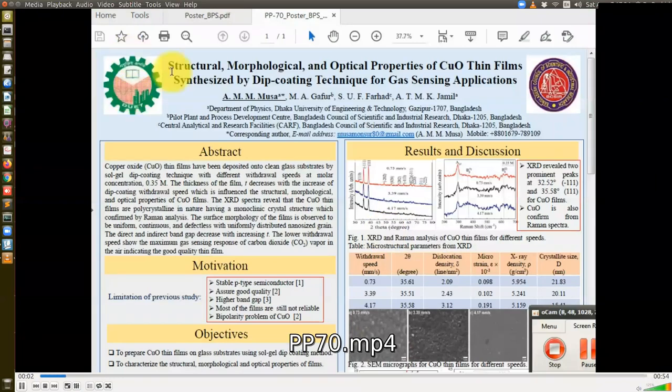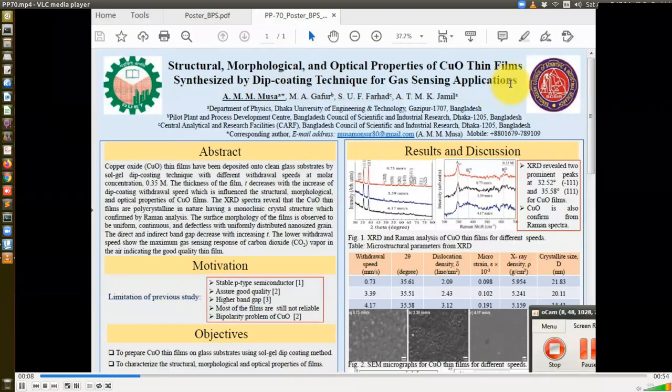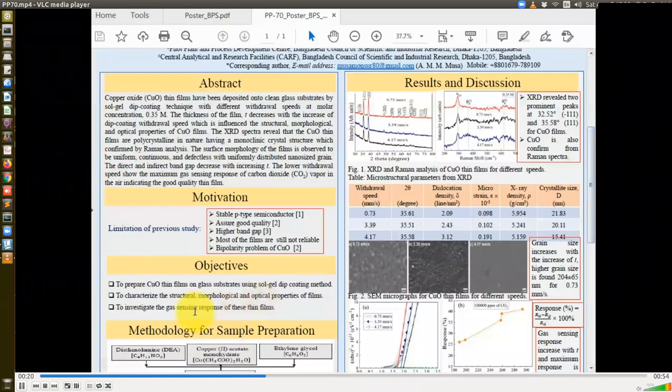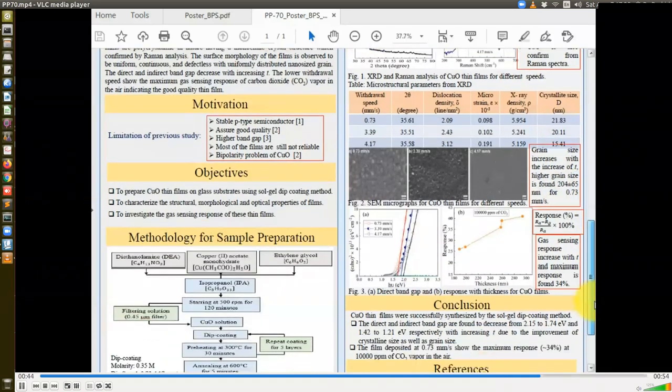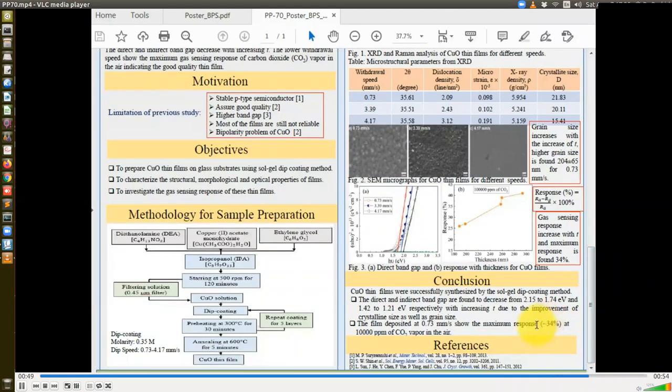Hello everyone. This is Arshad Mahmood Musa. Our topic is The Structural, Morphological and Optical Properties of Cuprous Oxide Thin Film Synthesized by Dip Coating Technique for Gas Sensing Applications. Cuprous oxide thin films have been deposited onto cleaned glass substrate by sol-gel dip coating technique with different withdrawal speed and molar concentration of different parameters. Our main objective is to investigate the gas sensing response of this thin film. The precursor used is copper acetate monohydrate. Here in results and discussion, we have two prominent peak from XRD analysis which is minus 111 and 111. And Raman analysis also confirmed this is Cu2O. We have higher crystallite size and higher grain size with the lower withdrawal speed which is 0.70 millimeter per second. And the higher crystallite size is 21.83 nanometer and the higher grain size is 204 plus minus 65 nanometer. And higher gas sensing response is found when the film thickness is high which is 34 percent which is found for 10,000 ppm of carbon dioxide in air. Thank you.